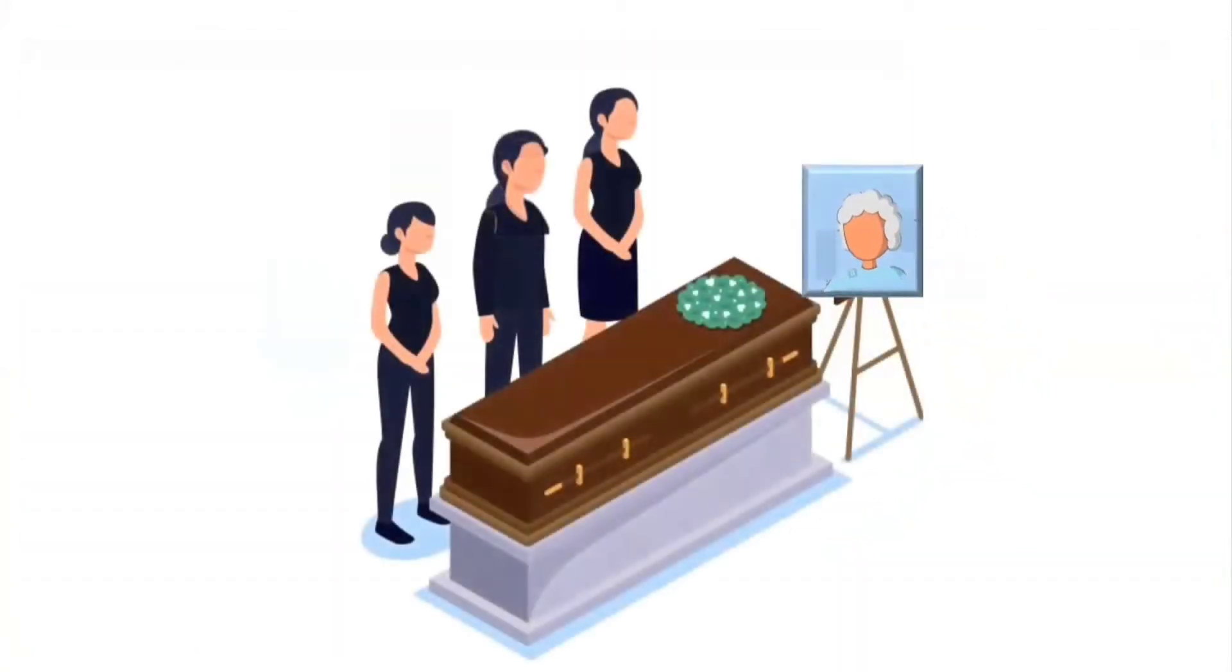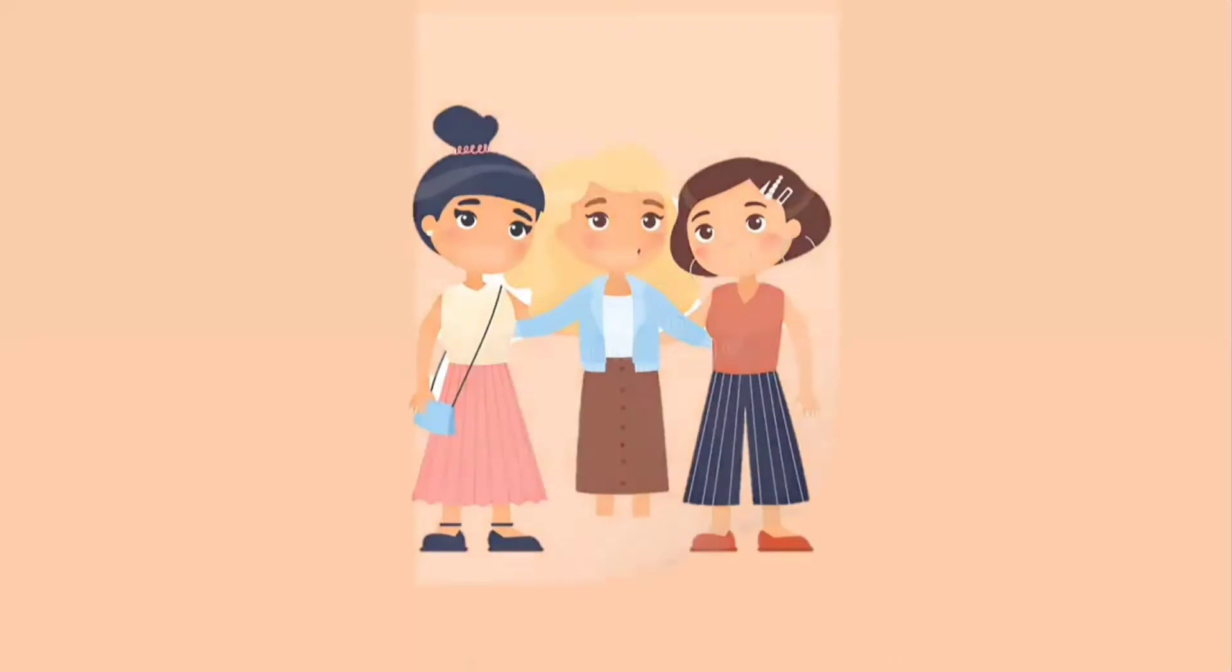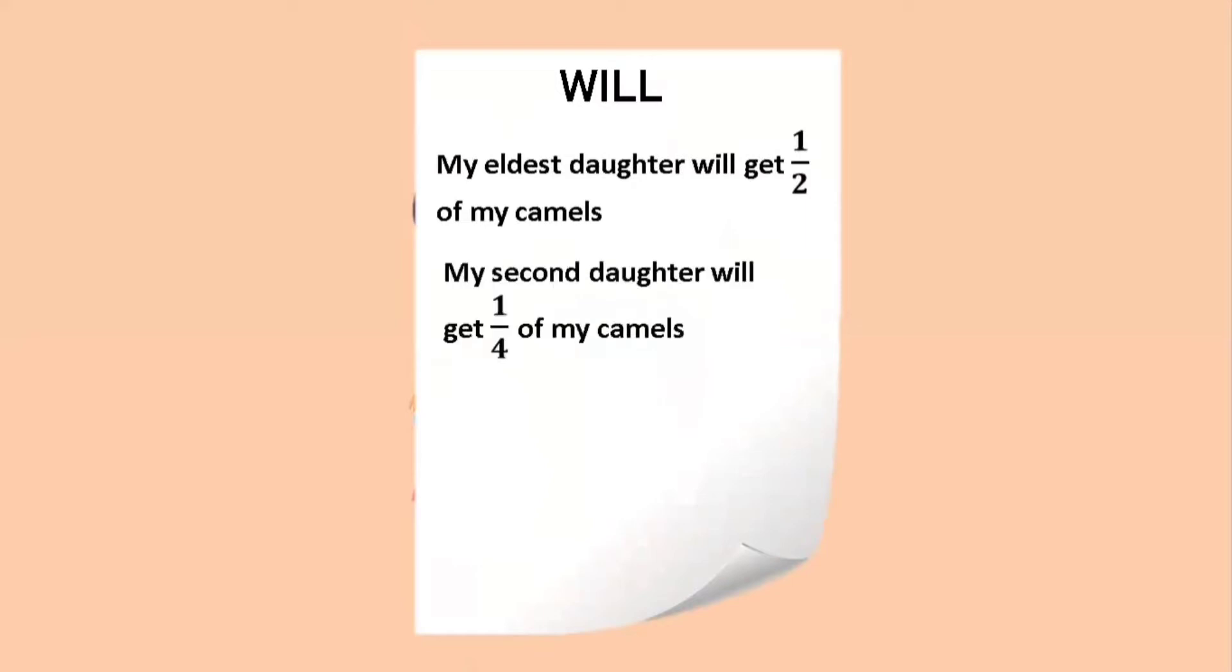After her death, the daughters read what she had written in her will. The will was as follows. My eldest daughter will get half of my camels. My second daughter will get one fourth of my camels. My third daughter will get one fifth of my camels.